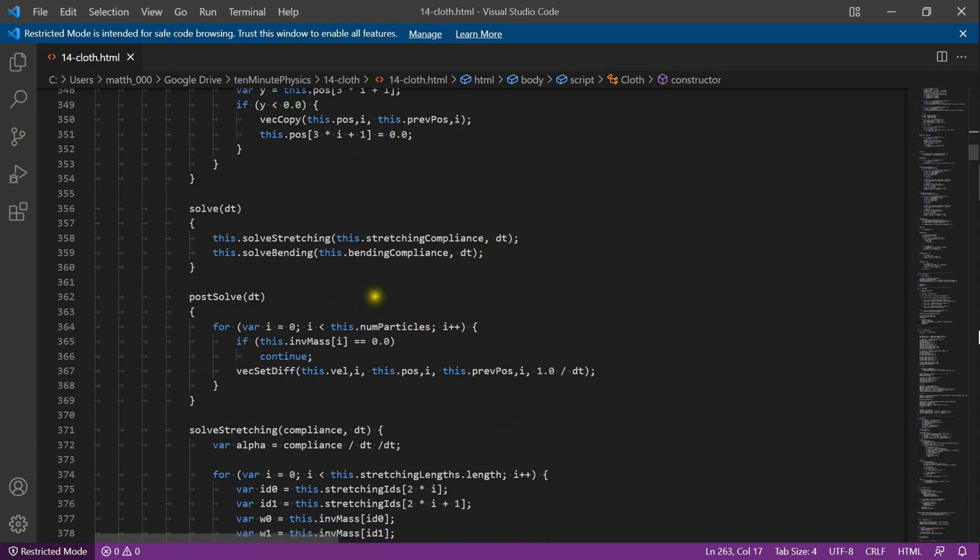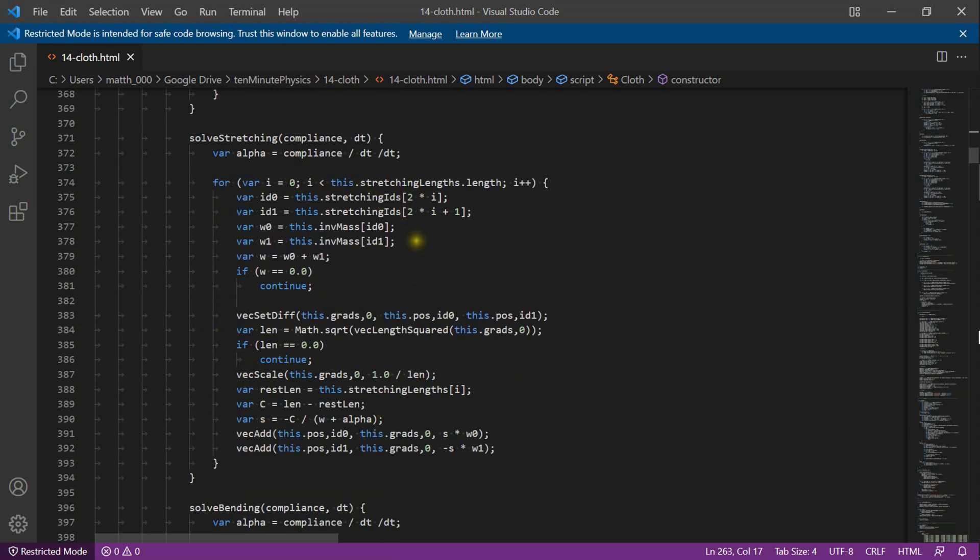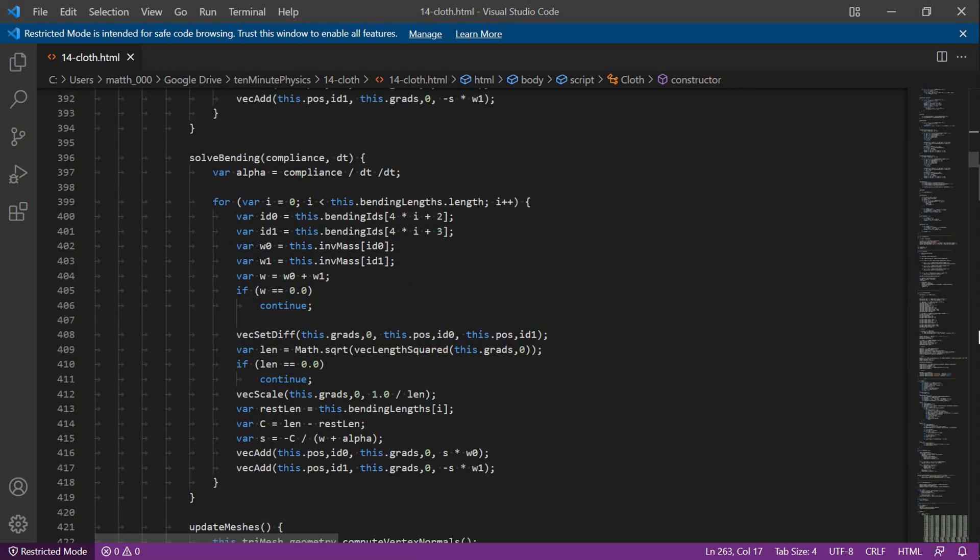Here we solve the constraints. We have two types, the stretching and the bending constraints. After this we update the velocities. This is the code to solve a distance constraint that I showed many times before. Since we use distance constraint for bending resistance the code is identical. The difference is that we now use the bending IDs.